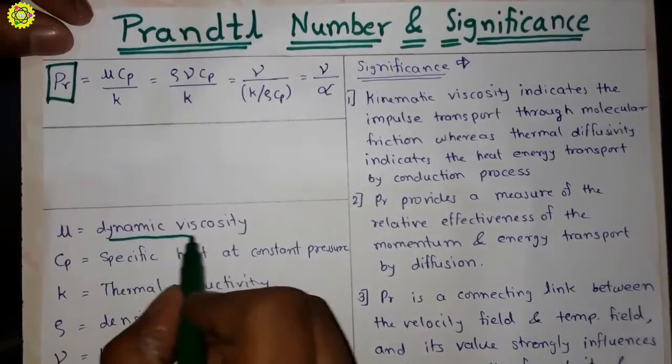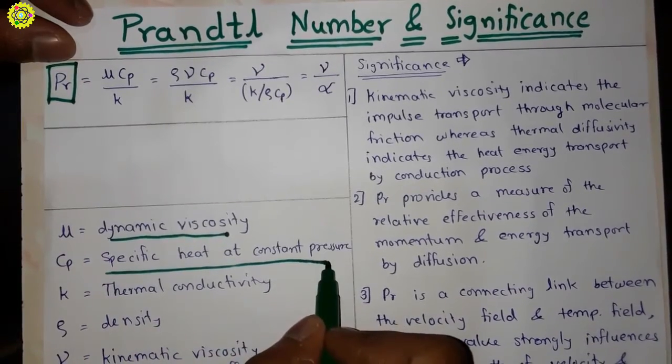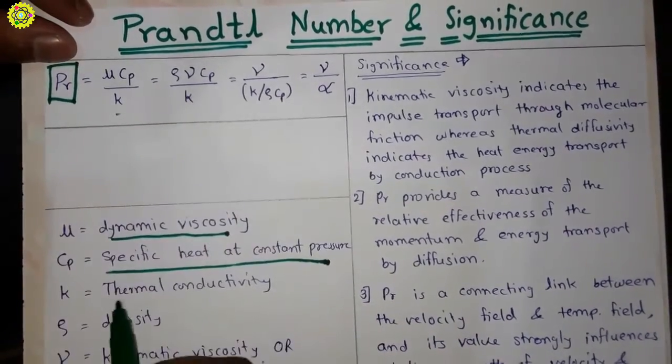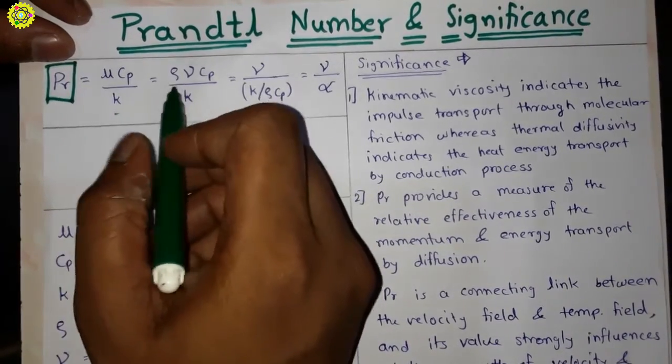...is dynamic viscosity, CP is specific heat at constant pressure, and K is thermal conductivity. Further, this formula is again simplified...